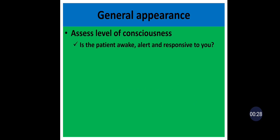On general appearance, assess the level of consciousness. Is the patient awake, alert, and responsive? If not, specify the level of consciousness — whether the patient is lethargic, obtunded, stuporous, or comatose.